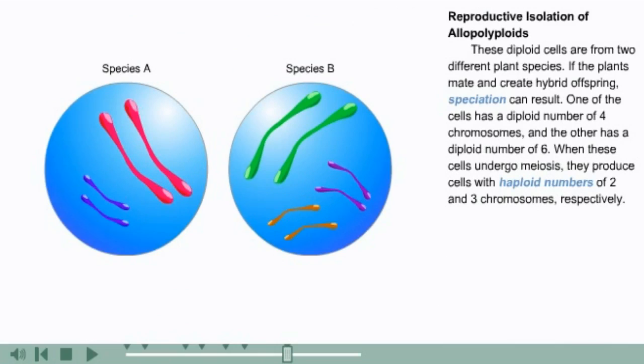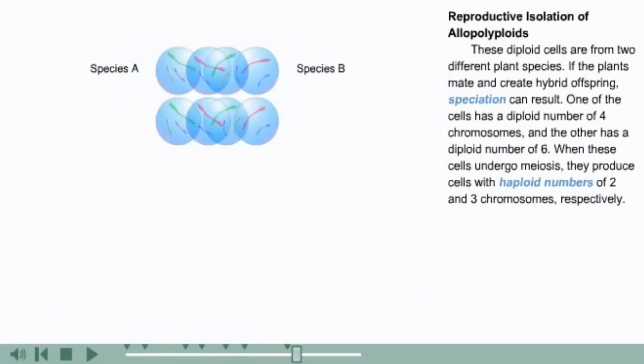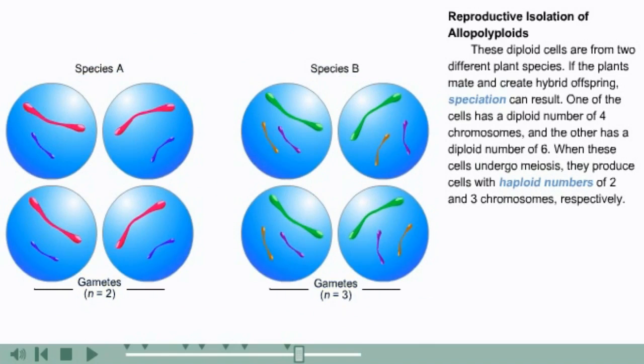These diploid cells are from two different plant species. If the plants mate and create hybrid offspring, speciation can result. One of the cells has a diploid number of four chromosomes and the other has a diploid number of six. When these cells undergo meiosis, they produce cells with haploid numbers of two and three chromosomes, respectively.